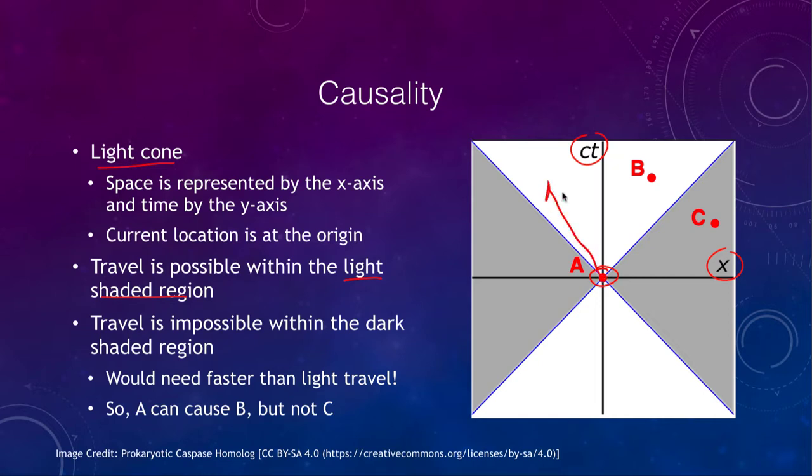So from A, you can go to here, you can go here, but you cannot travel in this direction. That would require traveling at faster than the speed of light. The blue lines would show light speed. So if you're traveling at the speed of light, you could just follow along this blue line. But you could not travel any faster. So travel is impossible within the dark shaded regions. There is no way to get into these regions from where we are right now without traveling faster than light. So in essence, A can cause B because A can get to B, but A cannot cause C. There is no way anything happening with A could cause C because it would require faster than light travel.